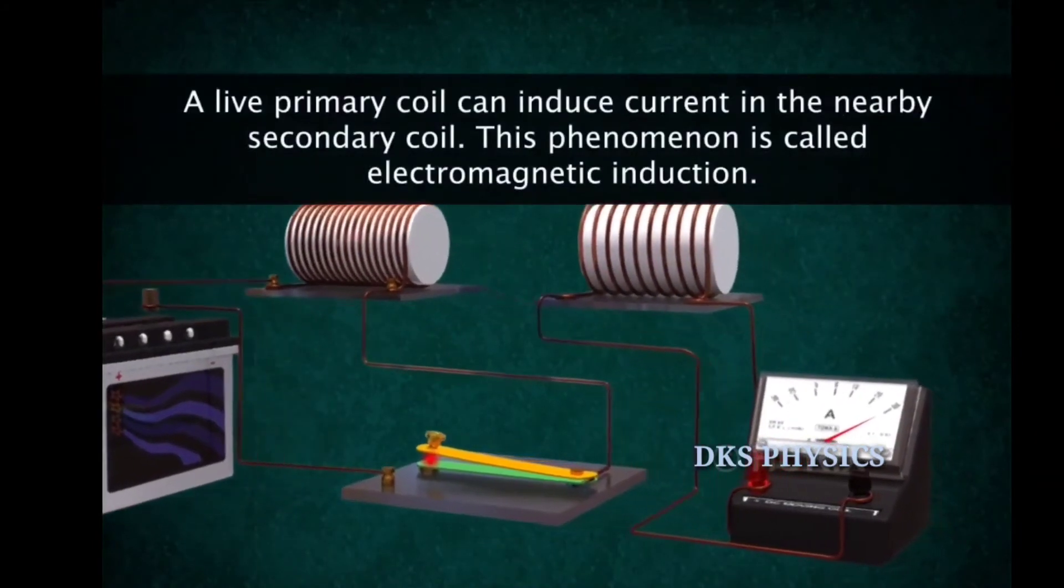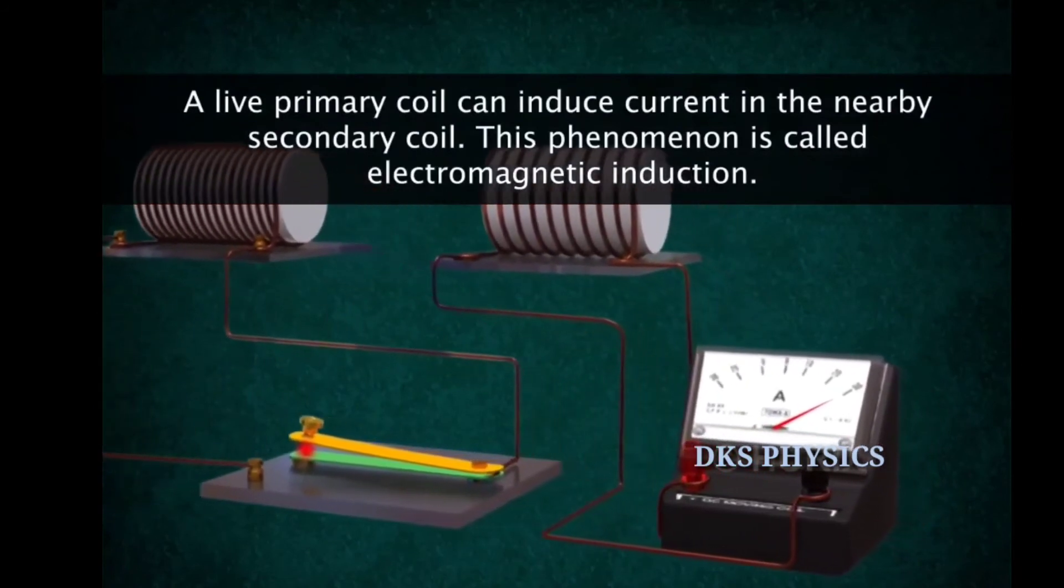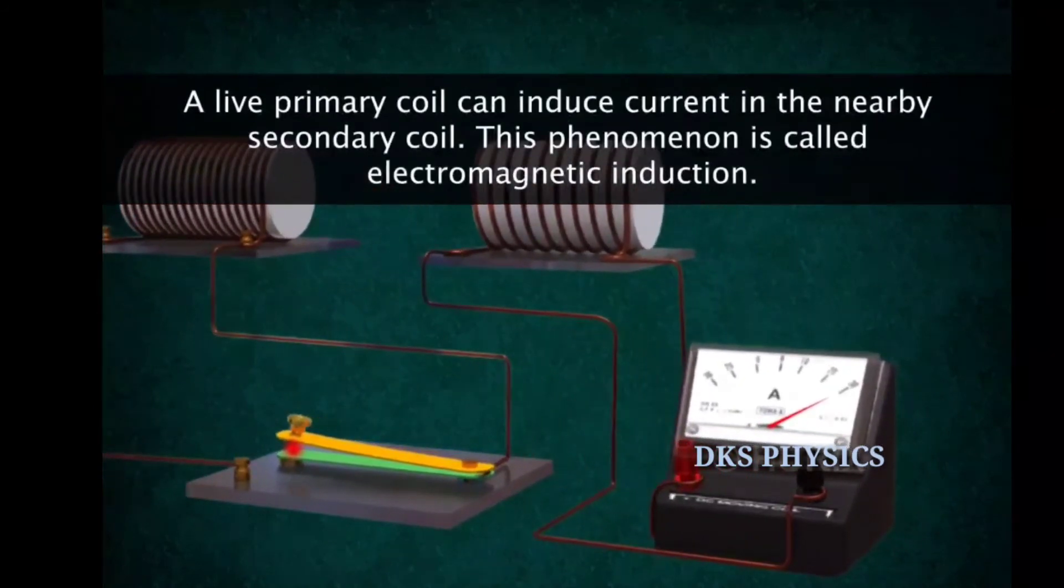It is obvious that without a magnet, a live primary coil can induce current in the secondary coil. This phenomenon is called electromagnetic induction.